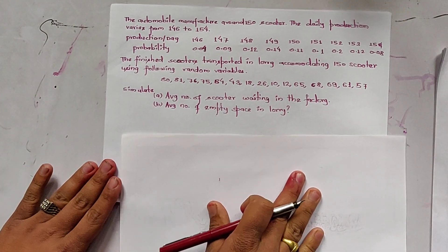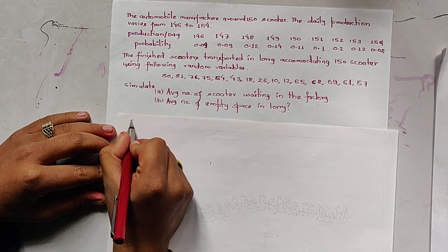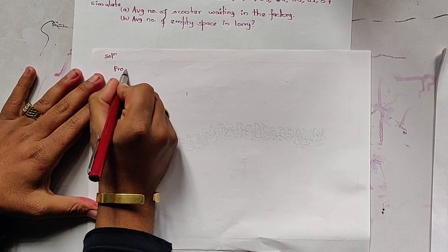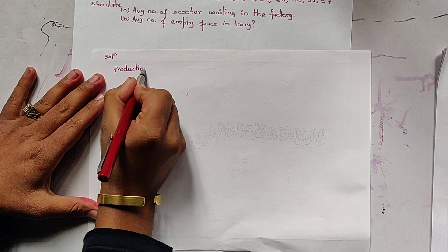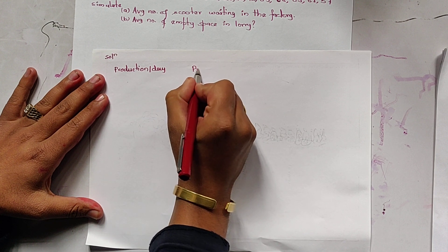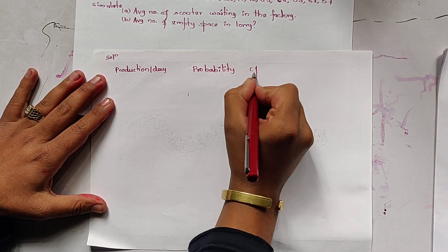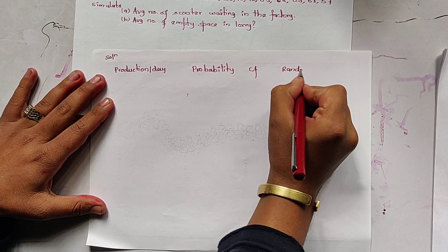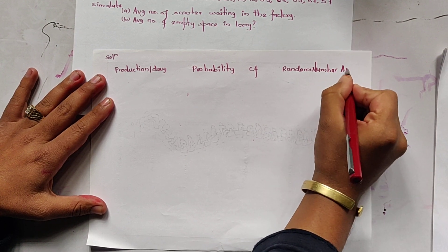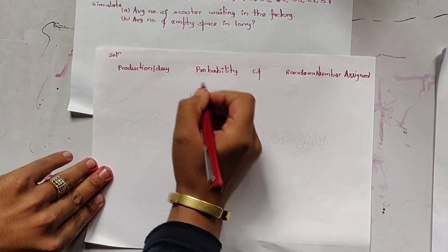So we solve this problem. First of all, we note down the given information. We draw a table with columns: Production Per Day, Probability, Cumulative Frequency, and Random Number Assigned.